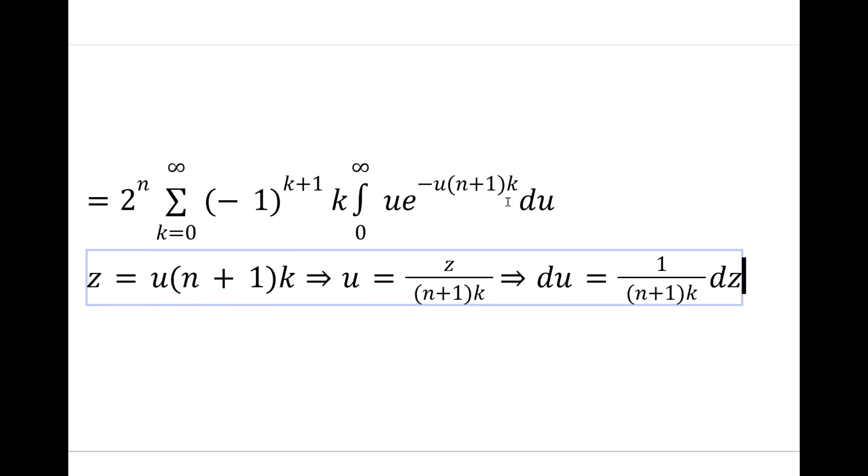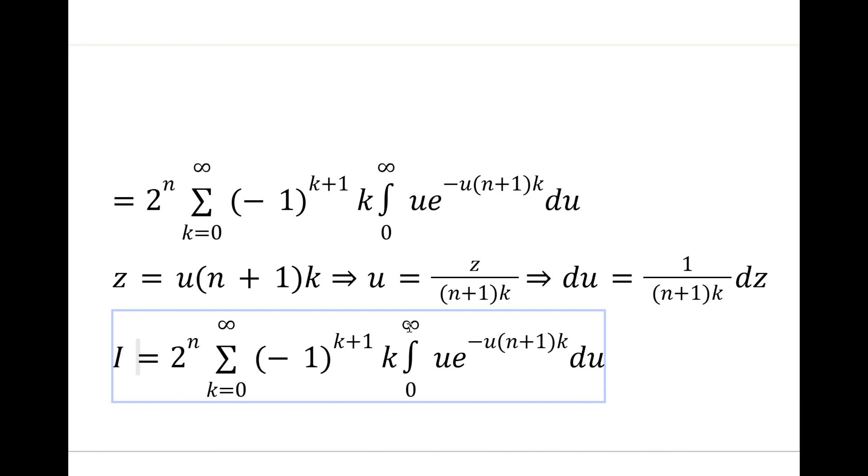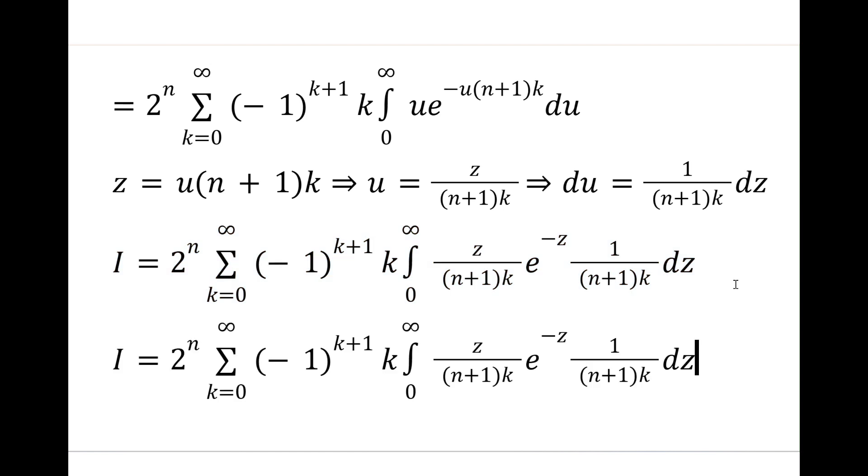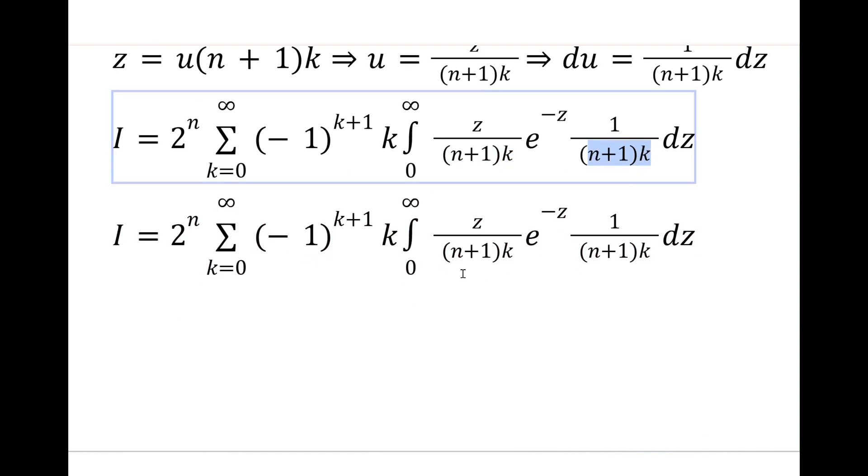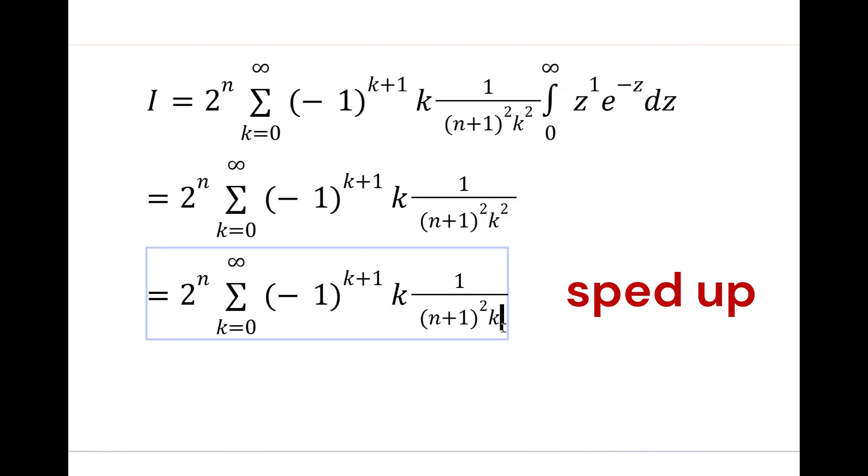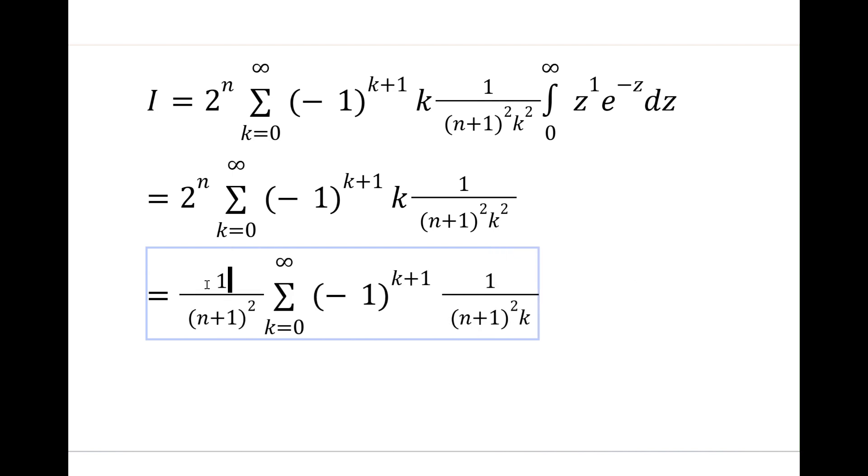We'll let this thing in the exponent u times n plus one k, we're going to let that be z and that way we can do dz. So du is one on n plus one k dz. How does this change the bounds? Well the bounds obviously don't change. So then that was just z and du is one on n plus one k. So we clearly get a one on n plus one squared k squared term from this. And now we just have this small integral to evaluate but you can just know that this is the gamma function evaluated at two or just the factorial of one. So this integral is just one.